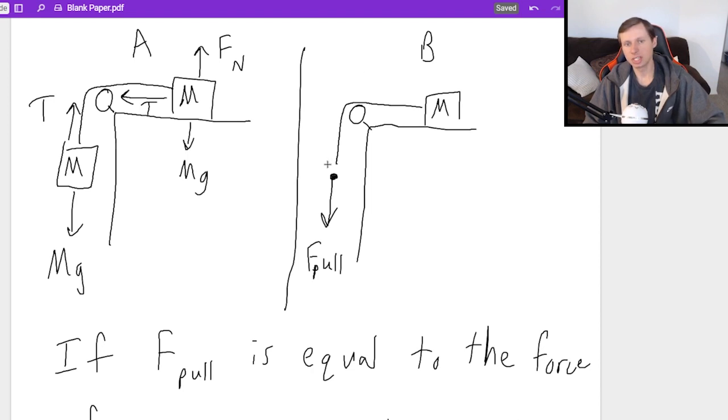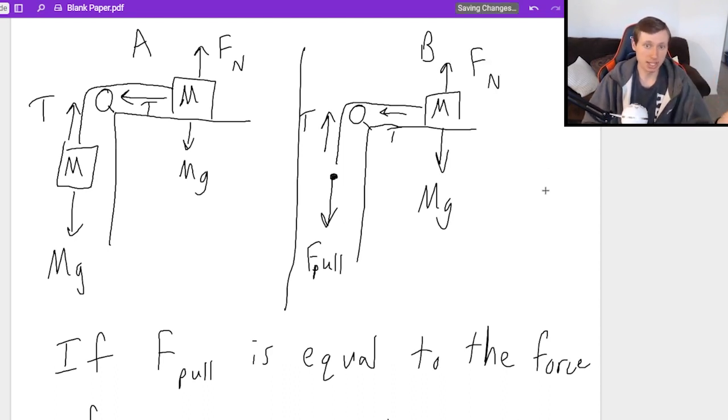Now if we were to do the same thing for the other block. We've got F-pull going down. There's a tension T going up. Tension T going to the left. That's exactly the same. MG going down. Normal force going up. It looks like everything is identical because it is.